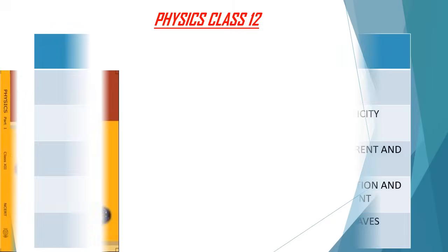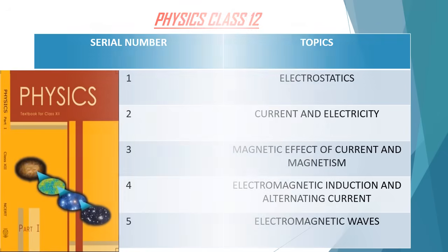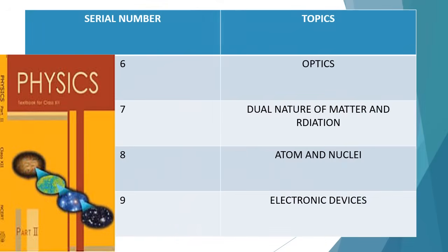Physics, Class 12th. The topics are: Electrostatics, Current and Electricity, Magnetic Effect of Current and Magnetism, Electromagnetic Induction and Alternating Current, Electromagnetic Waves, Optics, Dual Nature of Matter and Radiation, Atoms and Nuclei, and Electronic Devices.